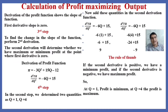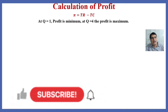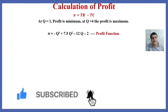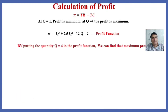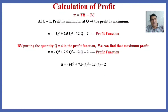Now we would like to know what the profit would be at the output level of 4. Using the profit function TR minus TC, we noted that at quantity 1 the profit is minimum, and at quantity 4 the profit is maximum. By putting the quantity 4 into the profit function we already derived, we can find the maximum profit. After substituting Q equals 4, the profit is 6 dollars.